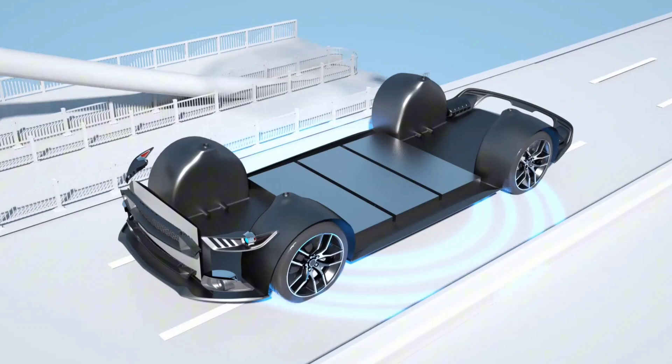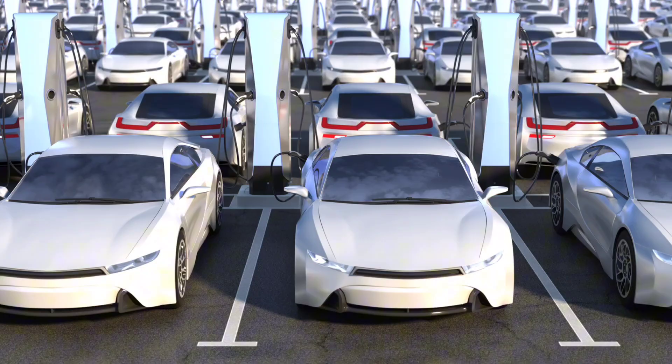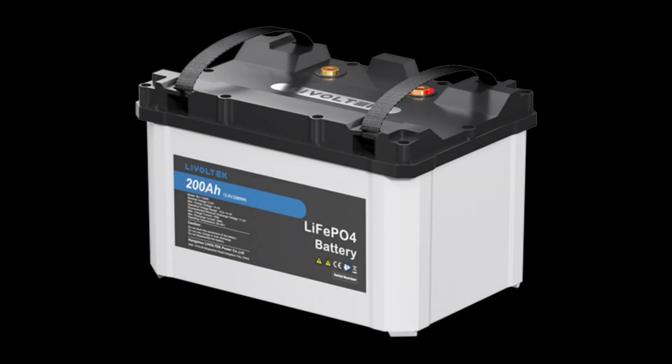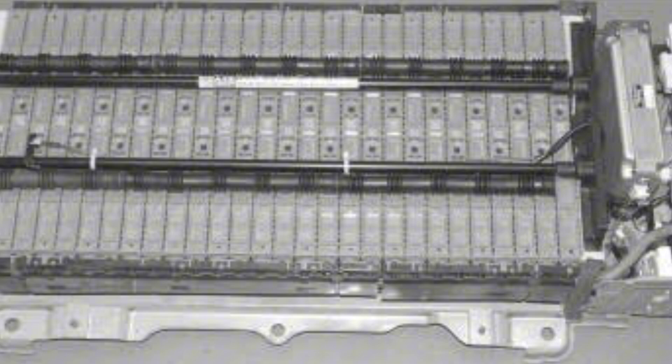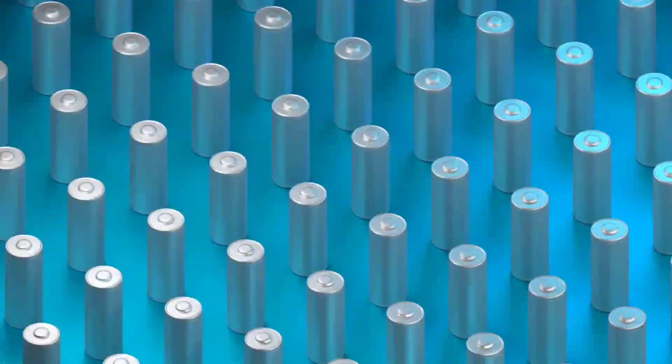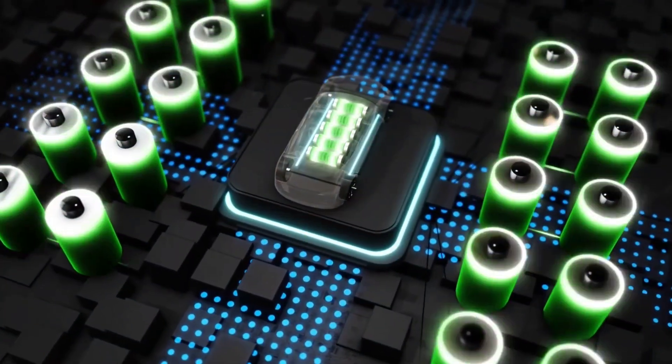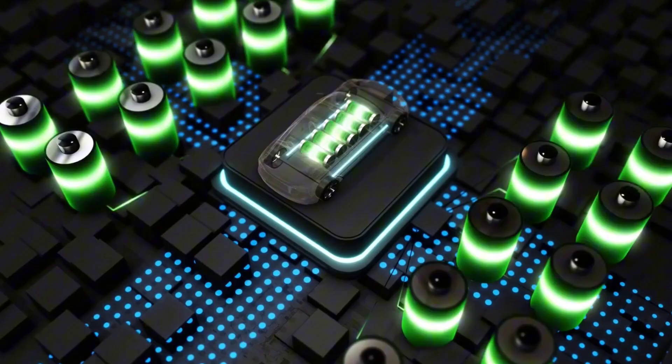EV batteries have come a long way. In the early 1900s, electric cars used heavy, low-energy lead-acid batteries. By the 1990s, nickel-metal hydride batteries powered early hybrids like the Toyota Prius. Today, the battle is all about lithium-ion batteries, faster charging, longer-lasting, and much more efficient.